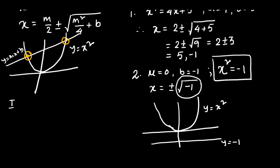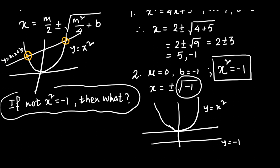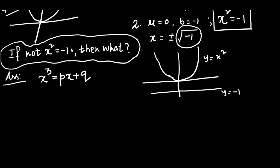The question is: if not x² = −1, then what? The reason actually lies in the attempt to solve equations of the form x³ = px + q. You can ask what is the speciality of this equation. To understand, we need to look at the graph.